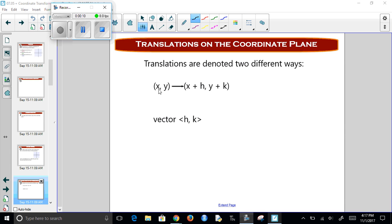Translations follow a rule. I take a point (x, y) and I move it to (x + h, y + k), given that we're moving it by this vector <h, k>.